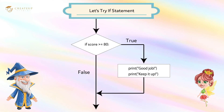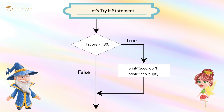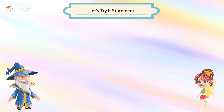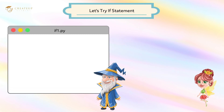Let's try the if statement. Let's make a program that displays "good job" and "keep it up" when the score is 80 points or more. Sounds interesting. Open a new file in IDLE and write the code like this.